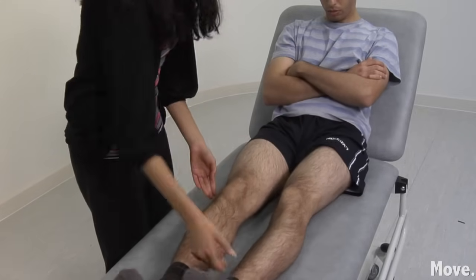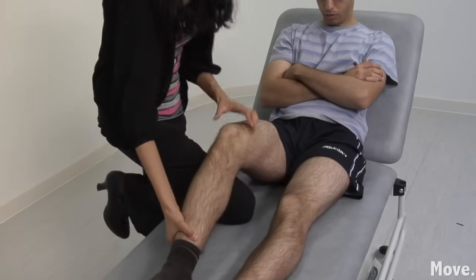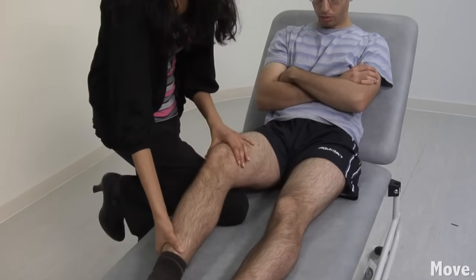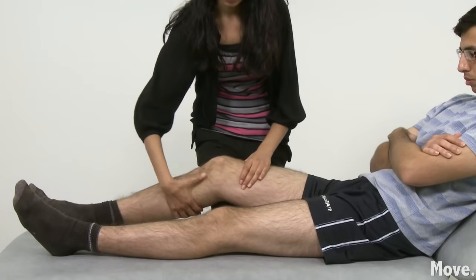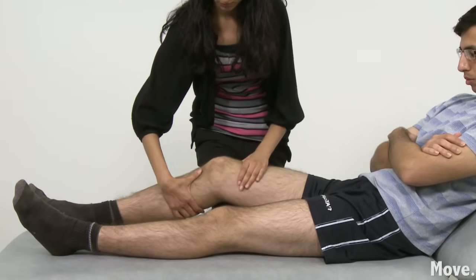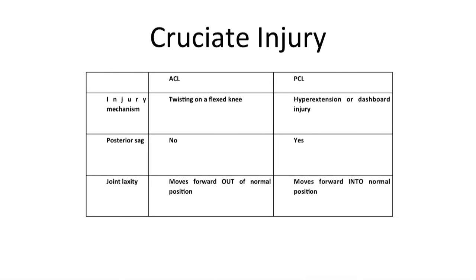An alternative is Lachman's test. This involves starting with the knee flexed to 30 degrees and holding the lower femur in one hand and the upper tibia with the other. The tibia is then drawn upwards whilst the femur is stabilised. This slide compares anterior and posterior cruciate injuries and how they may be differentiated.